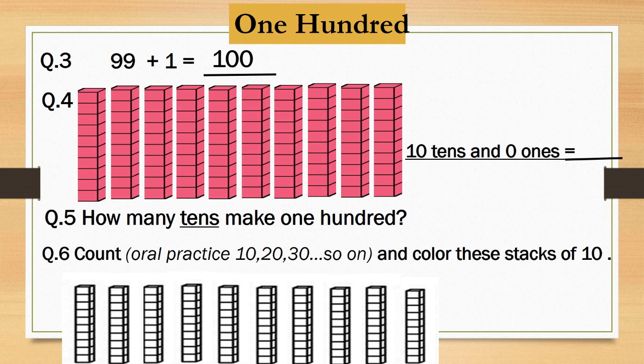Now, we will do question number 4. Oh children, here we have to add number 0 with 10 bars of 10s. First think and tell me, what do these 10 bars of 10 represent? Yes, it's 100. And now, when we will add 0 into it? And 0 means nothing. So, when we will add 0 into 100, we will get 100.